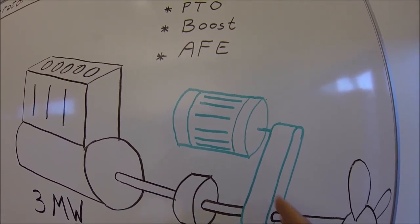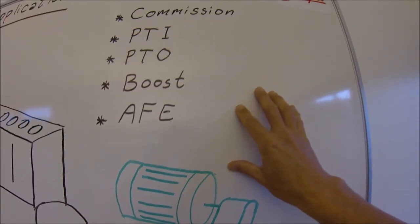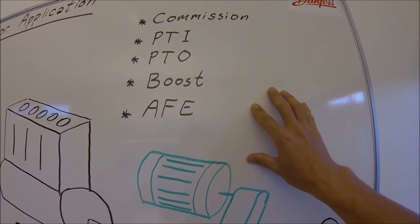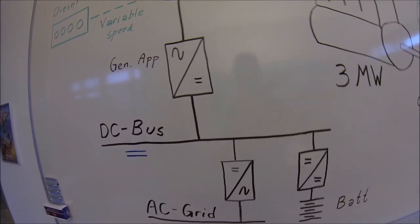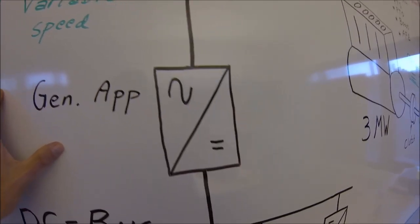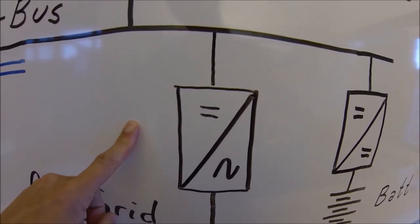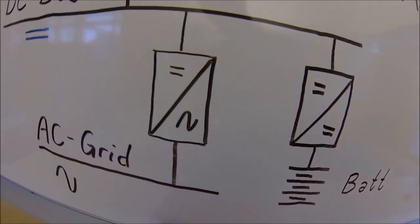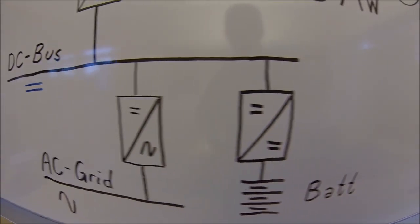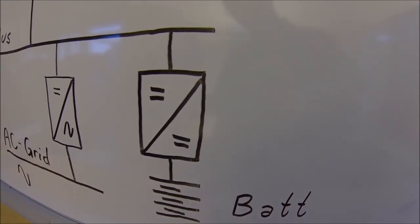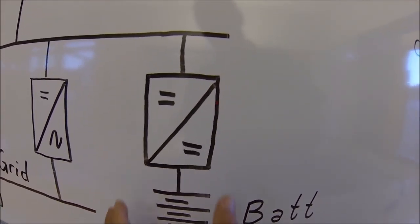Since energy can flow in both directions through the system, the generator application needs to be supported by a DC bus system which also is bi-directional. Typically the generator application is connected to an active frontend or microgrid application which is connected to the ship AC grid. It can also be connected to energy storage, typically a DC to DC converter and a battery.